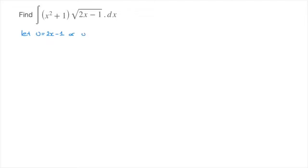The other option is to define the new variable, again u, as the entire radical function — that's the square root of 2x minus 1. Now had this been a cubic root or any other root, the method would still work. In this tutorial, we're going to use this first change of variable, u equals 2x minus 1. In the next tutorial, we'll solve the same question using the second option.